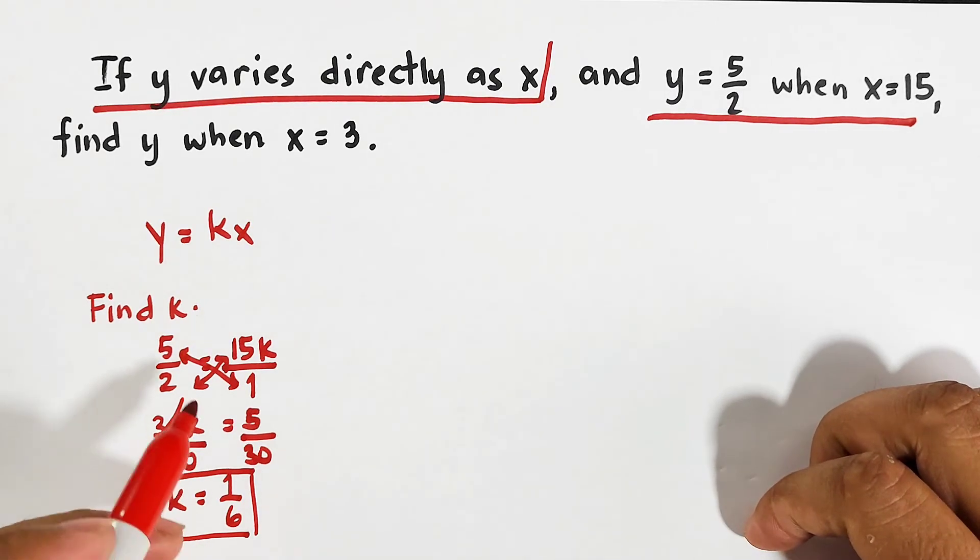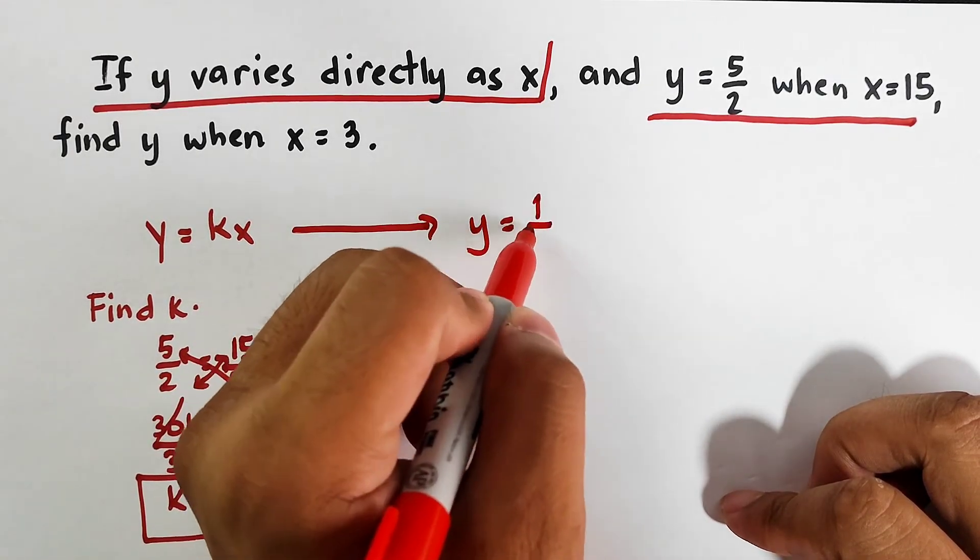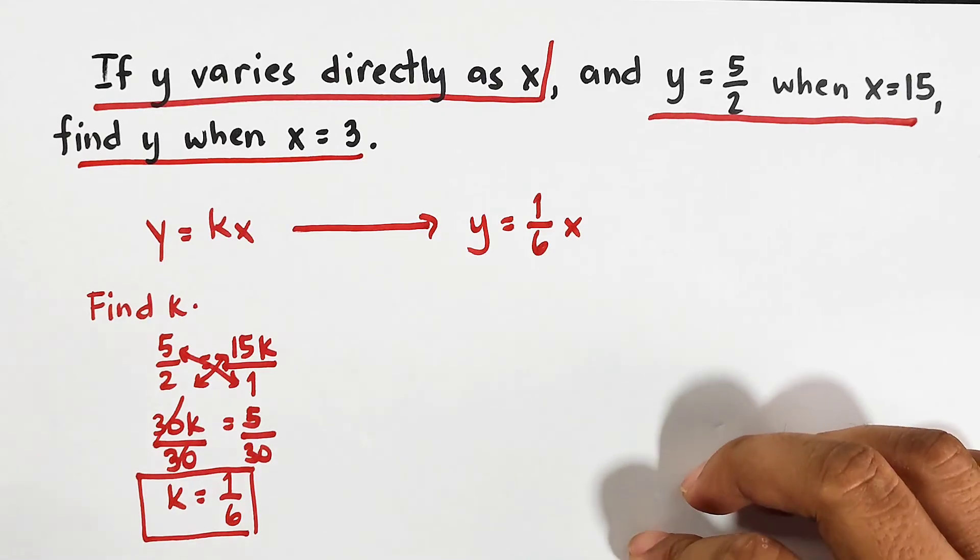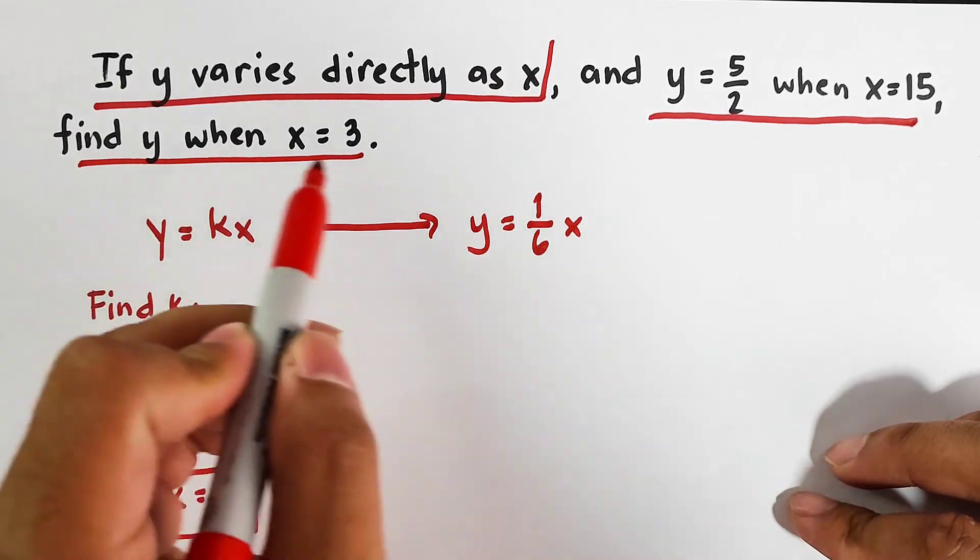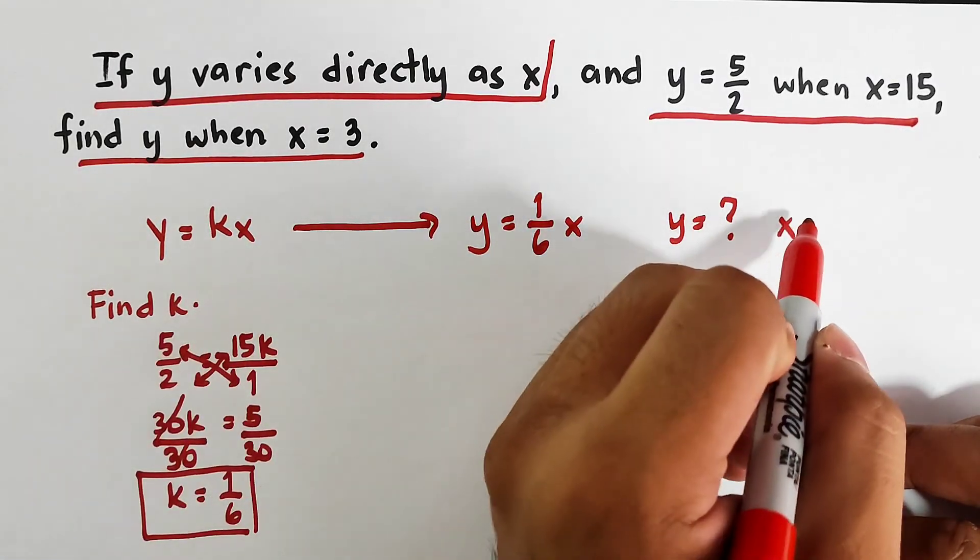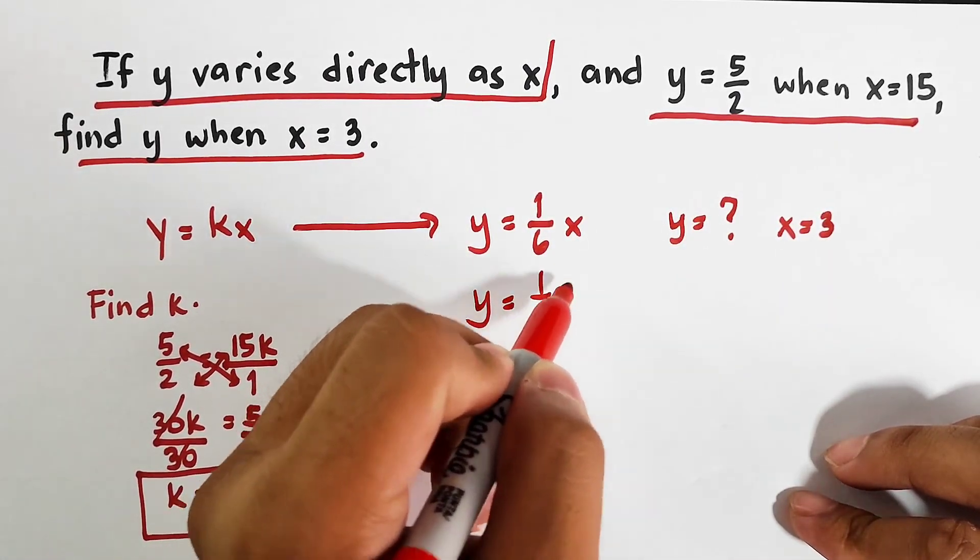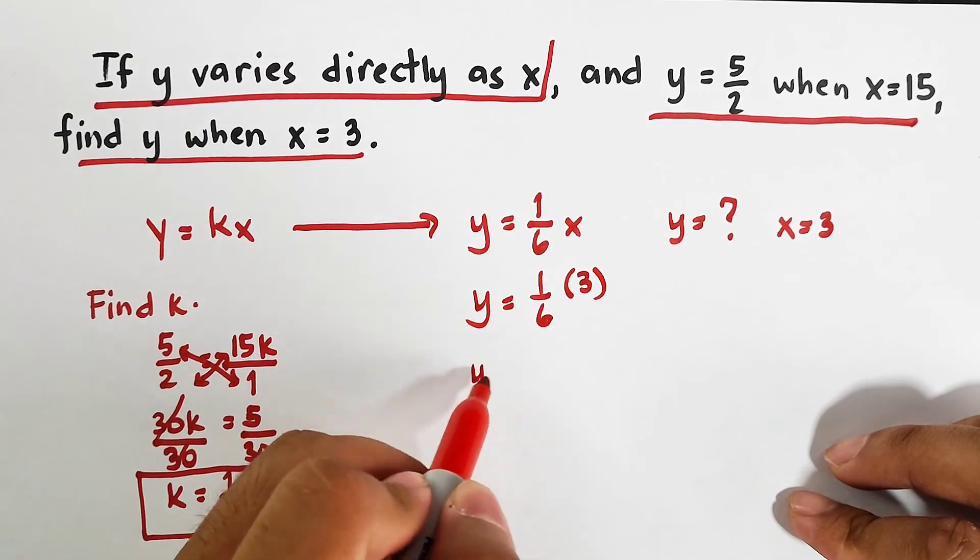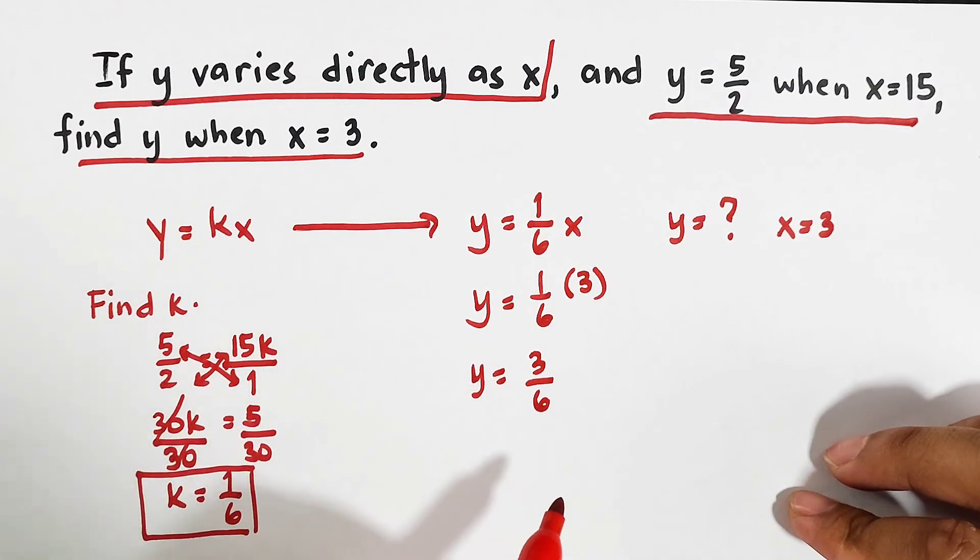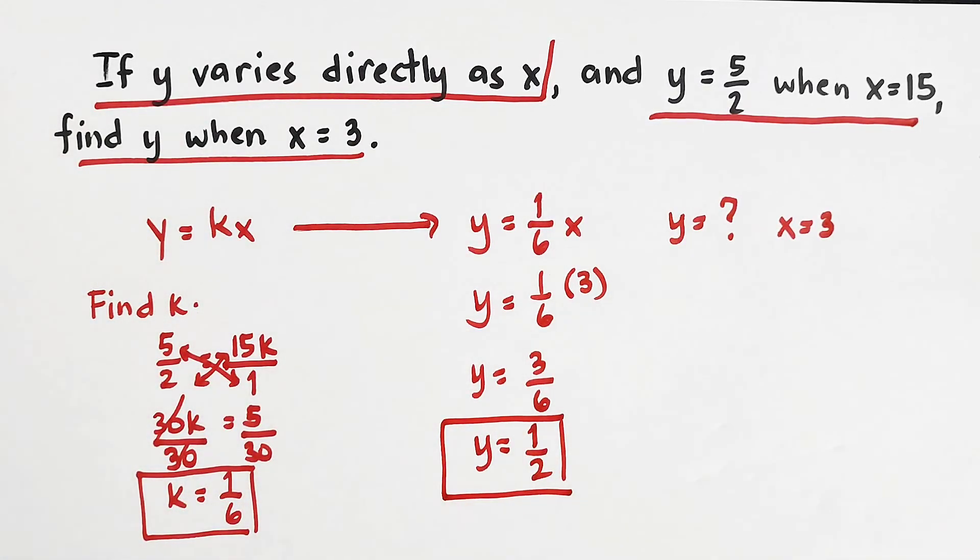Since we already have the value of k, we can go to this equation and replace the value of k. So your y is equal to 1 over 6x. This is now our working equation. To solve this problem, it says here, find y when x is equal to 3. So what we need to do is to put here y. Since y is unknown, we will put a question mark for x that is equal to 3. Replace x by 3. So that would be y is equal to 1 over 6 times 3. And y is equal to 1 times 3 is 3 over 6. And you can still express 3 over 6 in lowest terms. And if you do that, that is 1 half. And this is now the value of y.